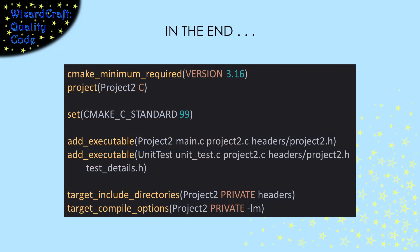So when it's all done, our CMakeLists.txt file for our simple C project will look something like this. I hope that's enough to get you started. I'll try to come back to this topic to flesh out some more complex situations soon.